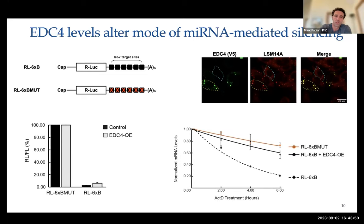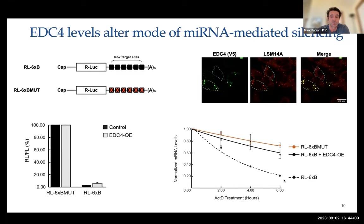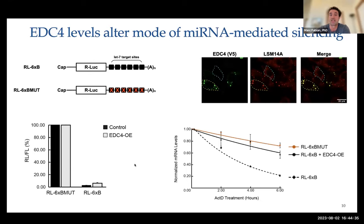However, when we took the same samples and treated them with actinomycin D to look at RNA stability over time by tracking degradation rates, we found that while normally the mutated control was very stable and the LET7-targeted RNA was rapidly decayed, overexpressing EDC4 led to a marked stabilization of the microRNA-targeted reporter. The RNA was still being repressed in terms of luciferase output, but the RNA itself was being stabilized, suggesting the mode of silencing had shifted — from RNA decay to translational repression with the RNA stable in the absence of RNA turnover.